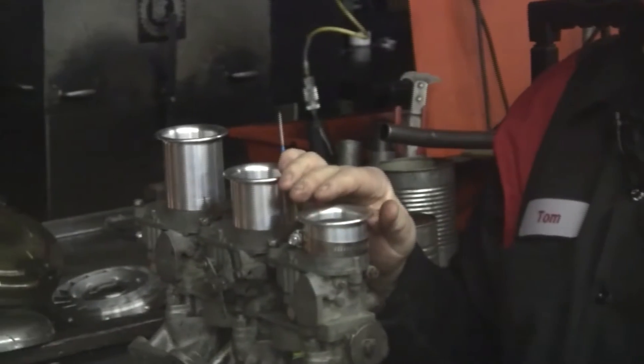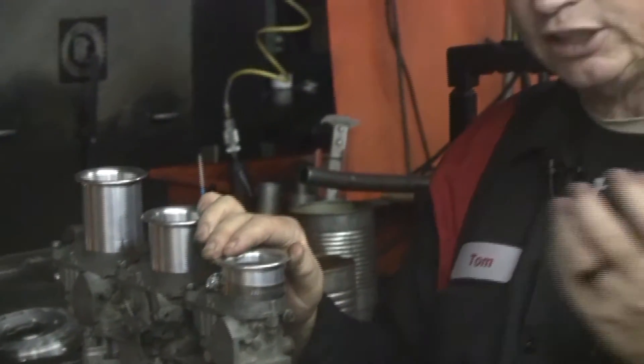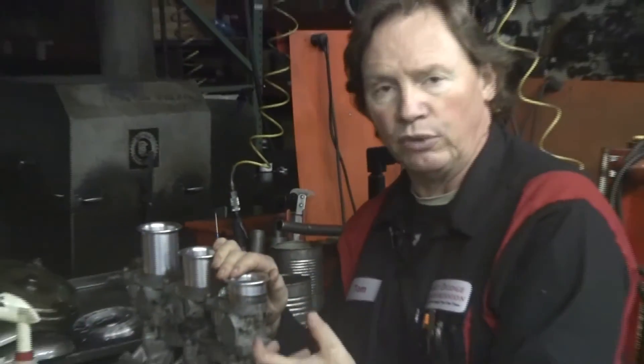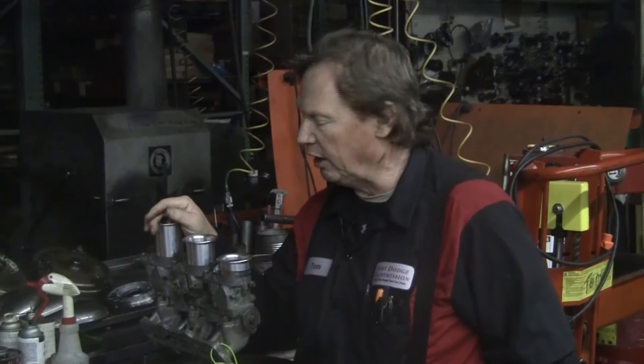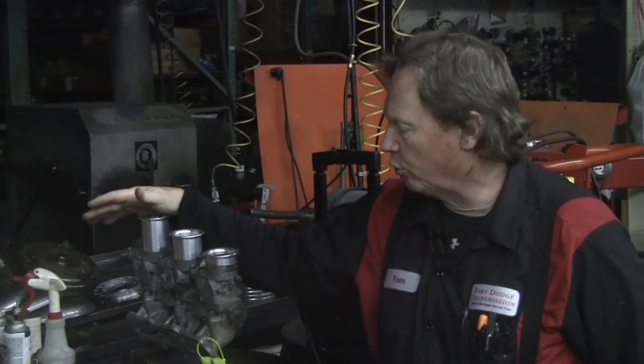If you remember a Saab exhaust manifold, it actually has three different length runners on the exhaust manifold itself, and the reason Saab does that is for improved range through RPMs of your torque and your horsepower.